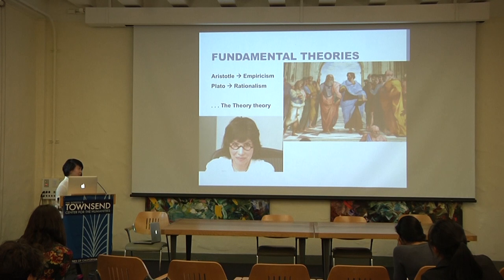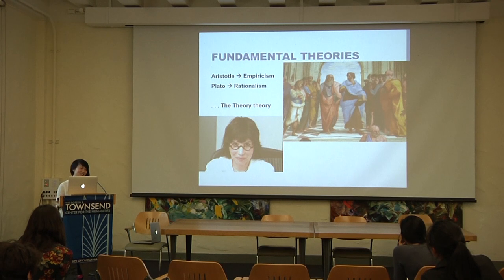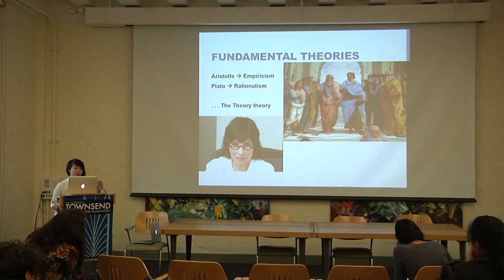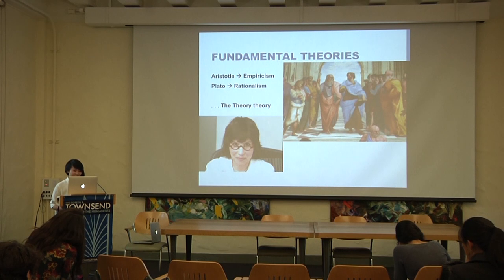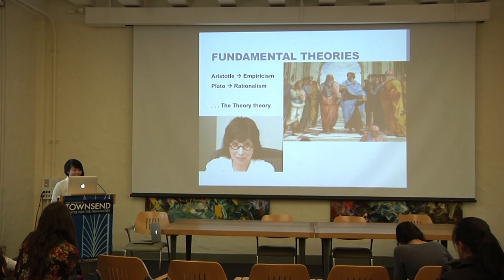Two fundamental theories that try to answer where knowledge comes from are empiricism and rationalism. Empiricism is basically the idea that we start off with a blank slate — it's like the nurture argument of nature versus nurture. Over time our experiences add up and are associated with one another. Plato, by contrast, thought there are certain universal truths we gradually remember as we grow up. A developmental psychology professor who spoke as a guest in CogSci C1 came up with the 'theory theory,' which is a combination of the two.